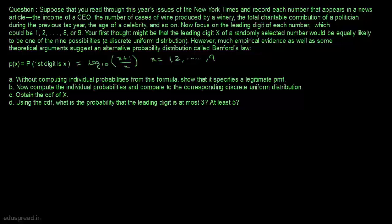Now focus on the leading digit of each number, which could be 1, 2, 3, 4, 5, 6, 7, 8, or 9. Your first thought might be that the leading digit X of a randomly selected number would be equally likely to be one of the nine possibilities. However, much empirical evidence as well as some theoretical arguments suggest an alternative probability distribution called Benford's Law.